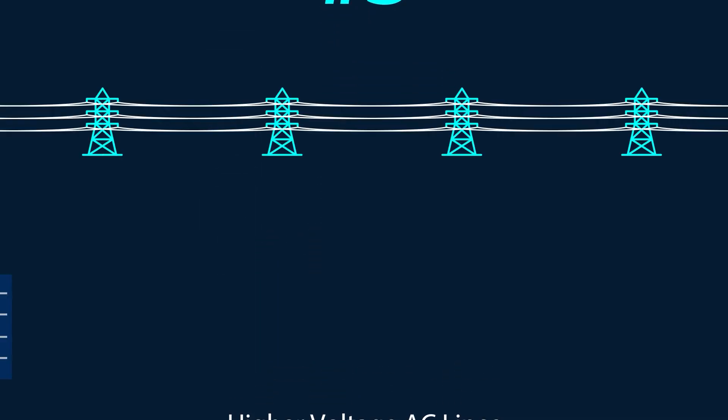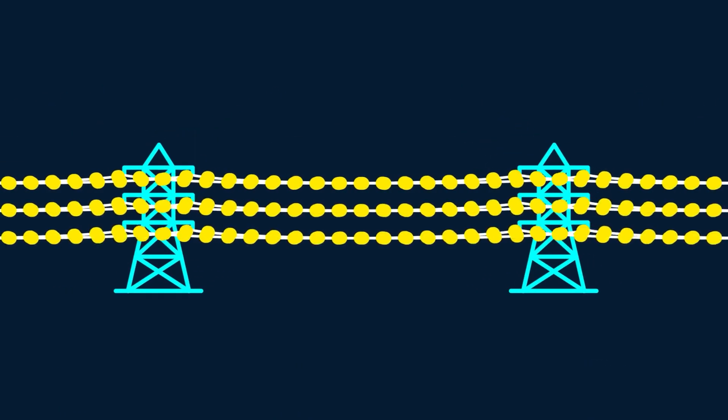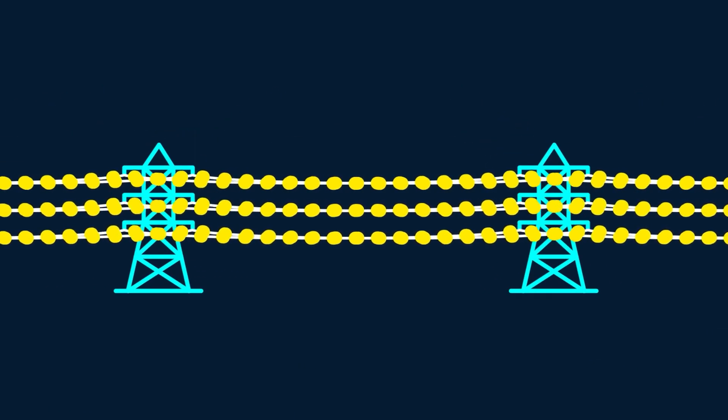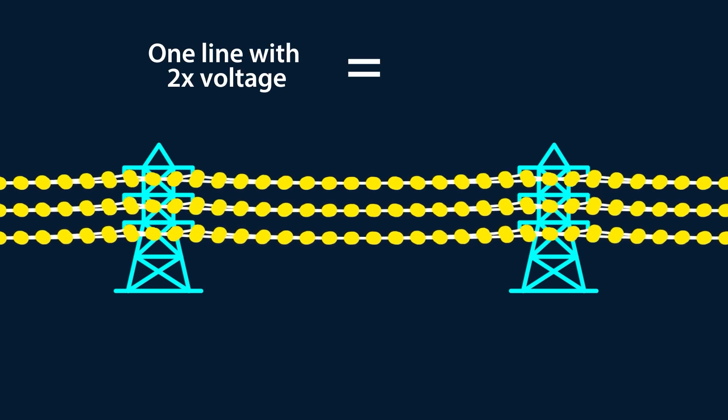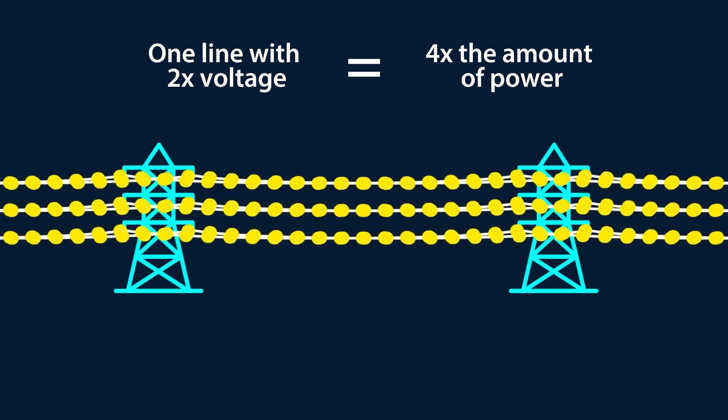Option three is to build new higher voltage AC lines. Higher voltage lines are like superhighways that can carry a lot more electricity than lower voltage lines. A line with double the voltage can carry four times the amount of power. In some cases, existing AC lines can be retrofitted to be higher voltage.